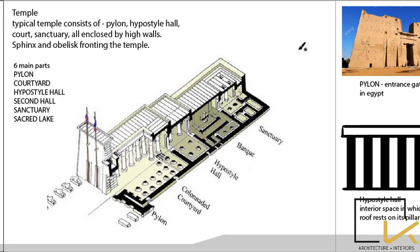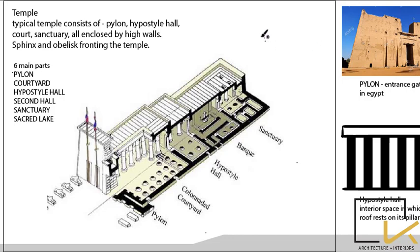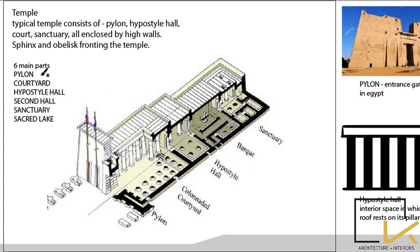Egyptian temples mainly consist of six parts. The first is the pylon — the entrance gateway tower in Egyptian architecture. Just as Japanese architecture has the torii and Hindu temples have the gopuram, the Egyptian entrance tower is called a pylon. Next is a small colonnaded courtyard, followed by the hypostyle hall — a hall whose roof is supported by columns.